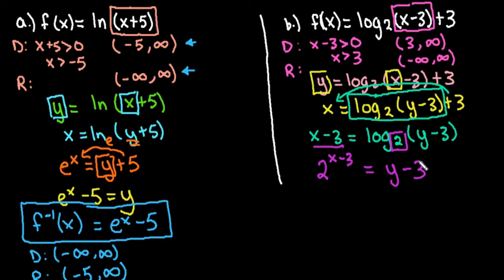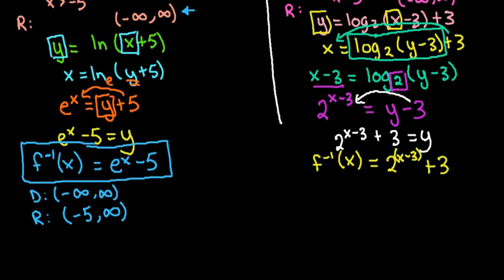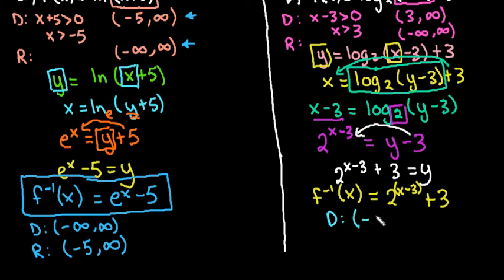To find y, we move the 3 to the other side, giving us 2 to the (x minus 3) power plus 3 equals y. In function notation: f inverse of x equals 2 to the (x minus 3) plus 3. Make sure the x minus 3 is in the exponent, and the plus 3 is on the outside, not contained in the exponent. The domain of the inverse equals the range of the original, which is negative infinity to positive infinity. The range of the inverse equals the domain of the original, so it is from 3 to positive infinity.